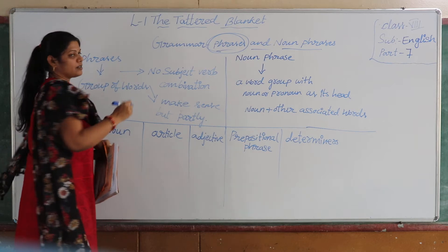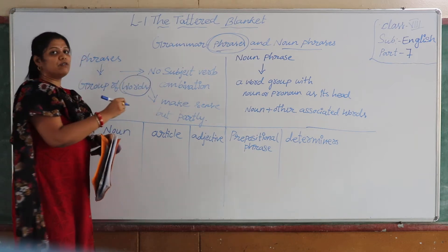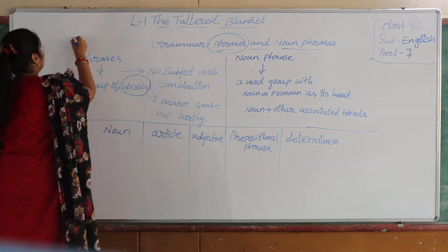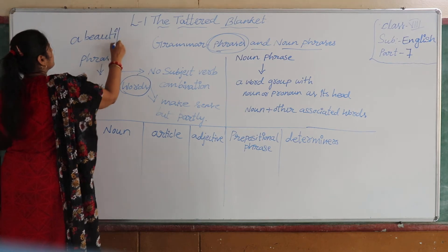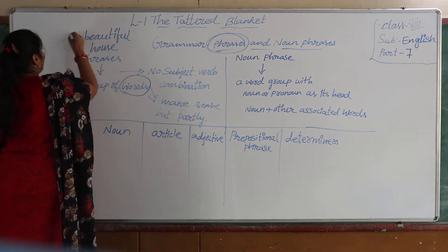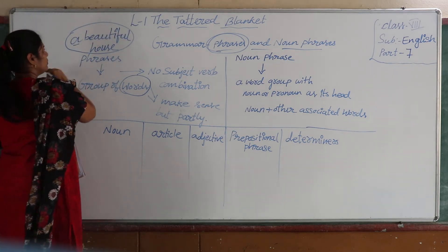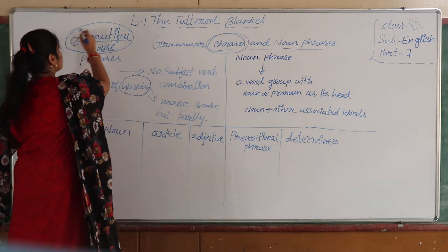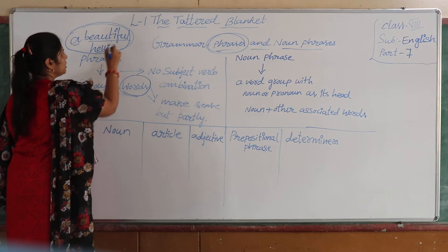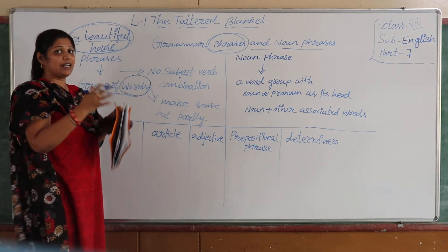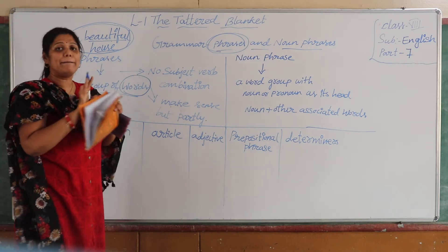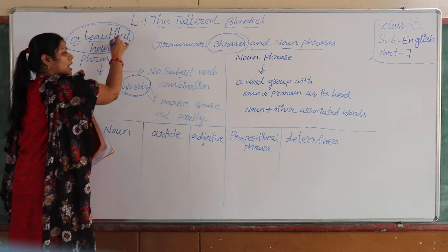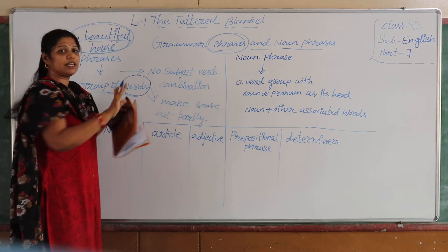In between that, we have what we call a phrase. A phrase is again a group of words, put together, but it gives only some meaning. For example, if I write here: 'a beautiful house.' When I say 'a beautiful house,' 'a' is a word, 'beautiful' is a word, and 'house' is a word — three words kept together, making a group of words. It gives you some sense — you understand 'a house which is beautiful' — but this does not give you a complete idea.